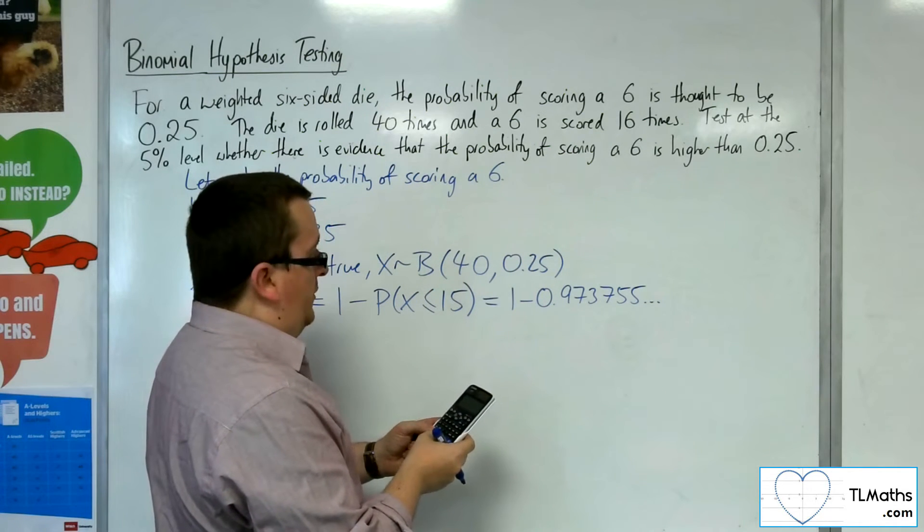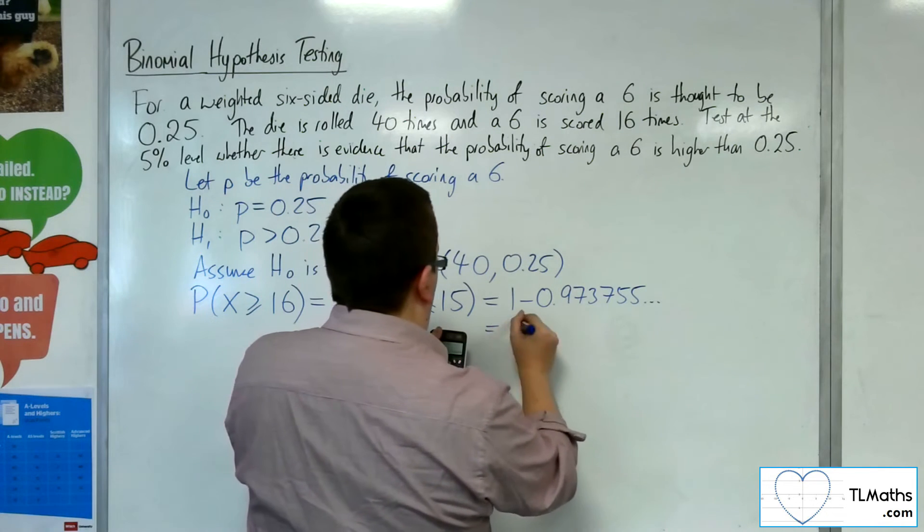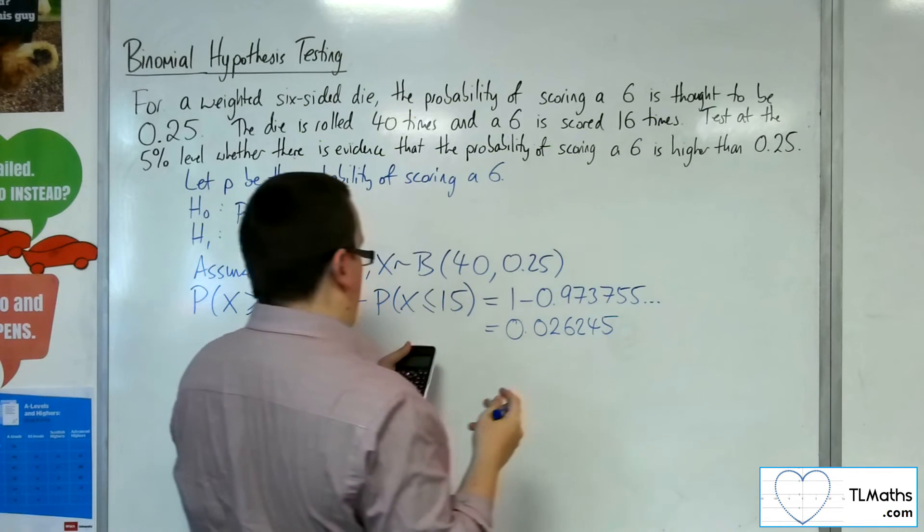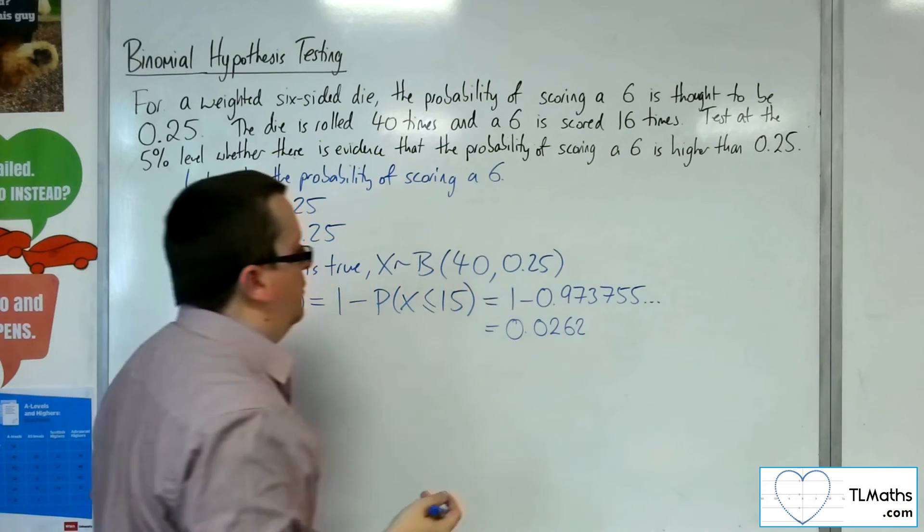So one minus 0.973755 is 0.026245, which is 0.0262 to three significant figures.